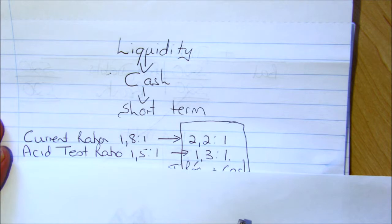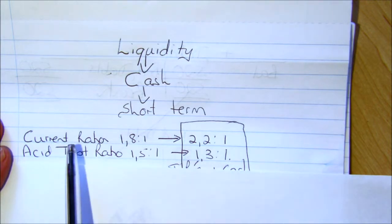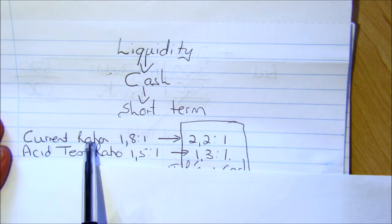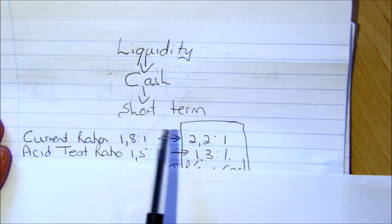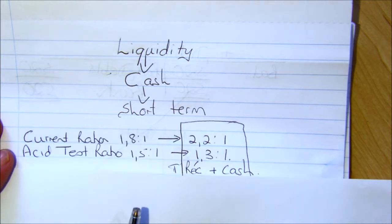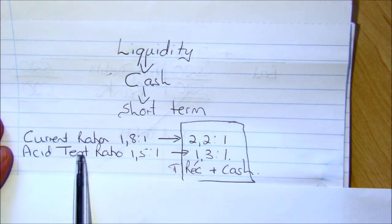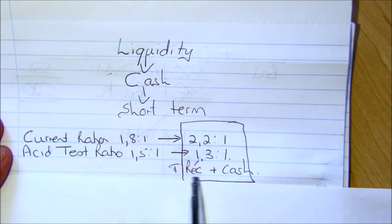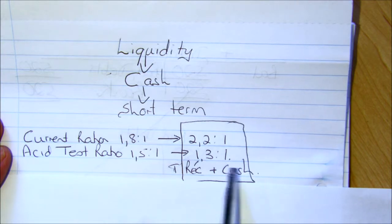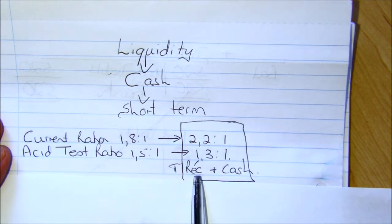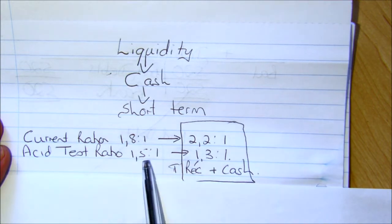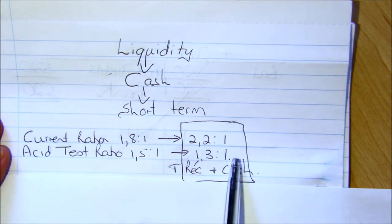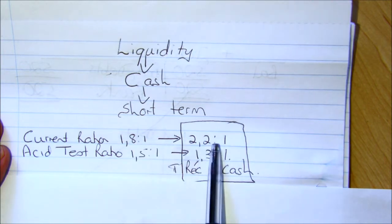The problem with the current ratio is it includes inventory. And businesses don't really want to be put into a position where they've got to sell their inventory to pay their debts. They'd rather use that money to buy more inventory to keep the business going. So, we do the acid test ratio, which excludes inventory. If we exclude inventory, in other words, we're looking at how much cash we've got in cash equivalent, and how much is expected to come in from our trade and other receivables, our debtors. Here, we'll notice that there's been a decrease from 1.5 is to 1 to 1.3 is to 1.